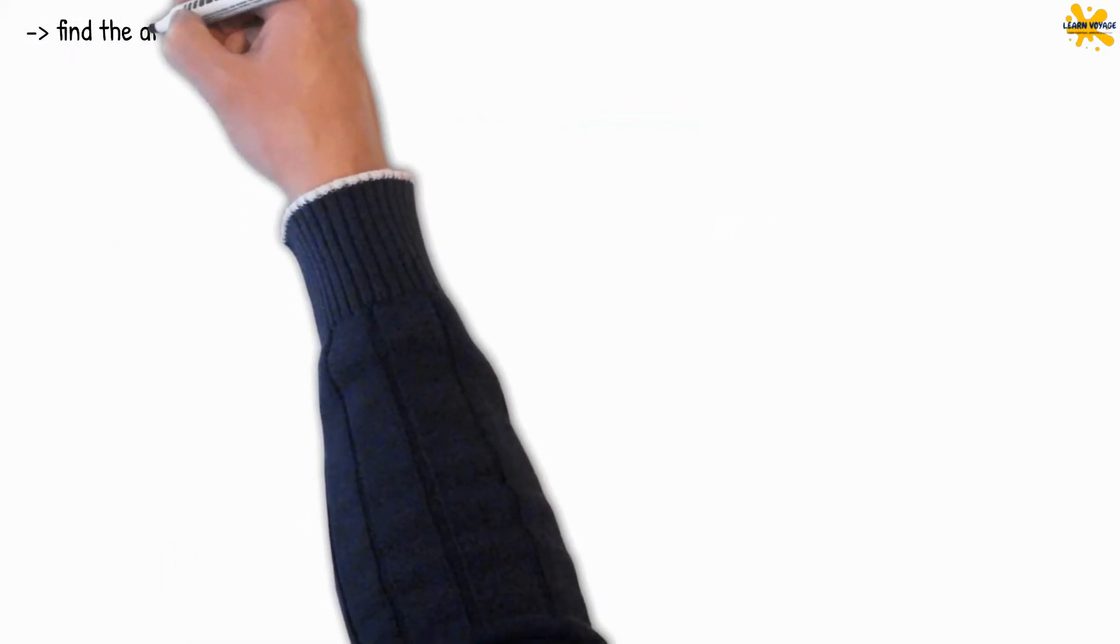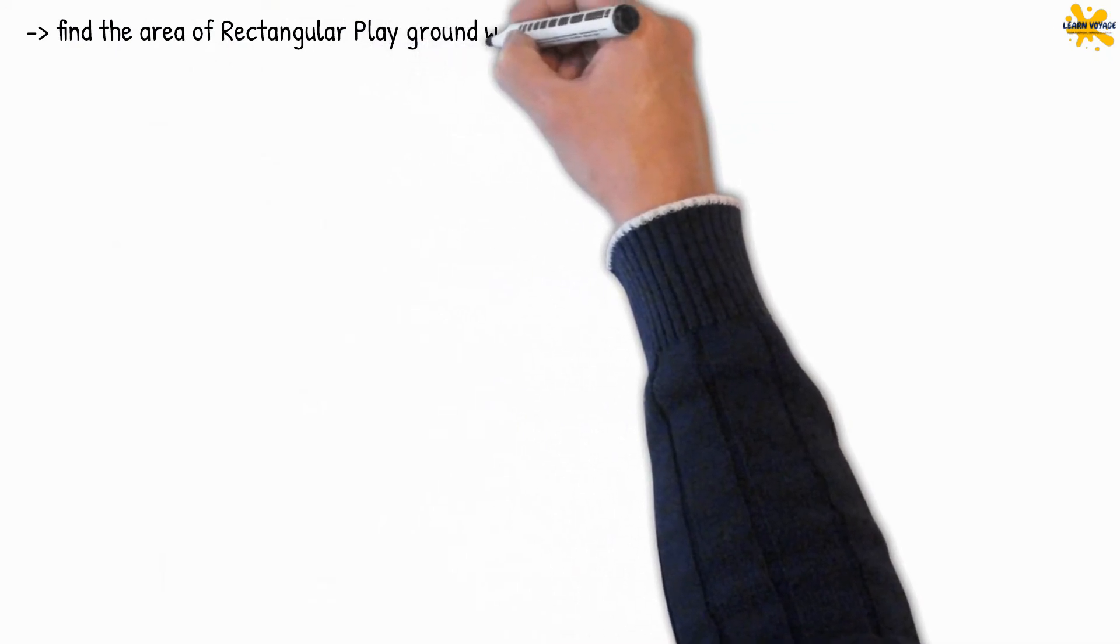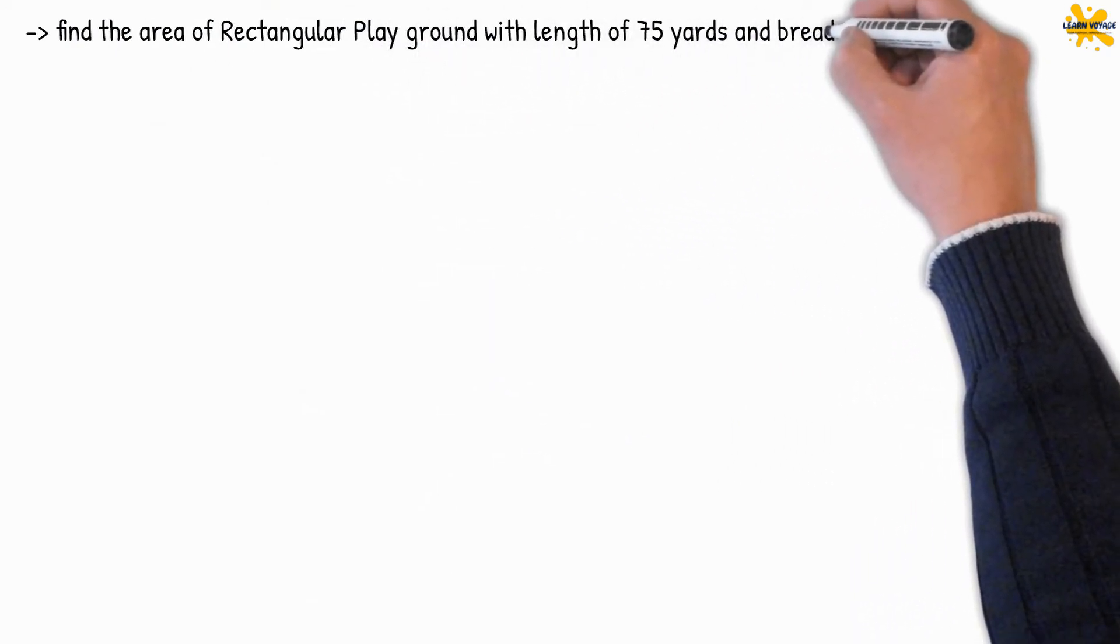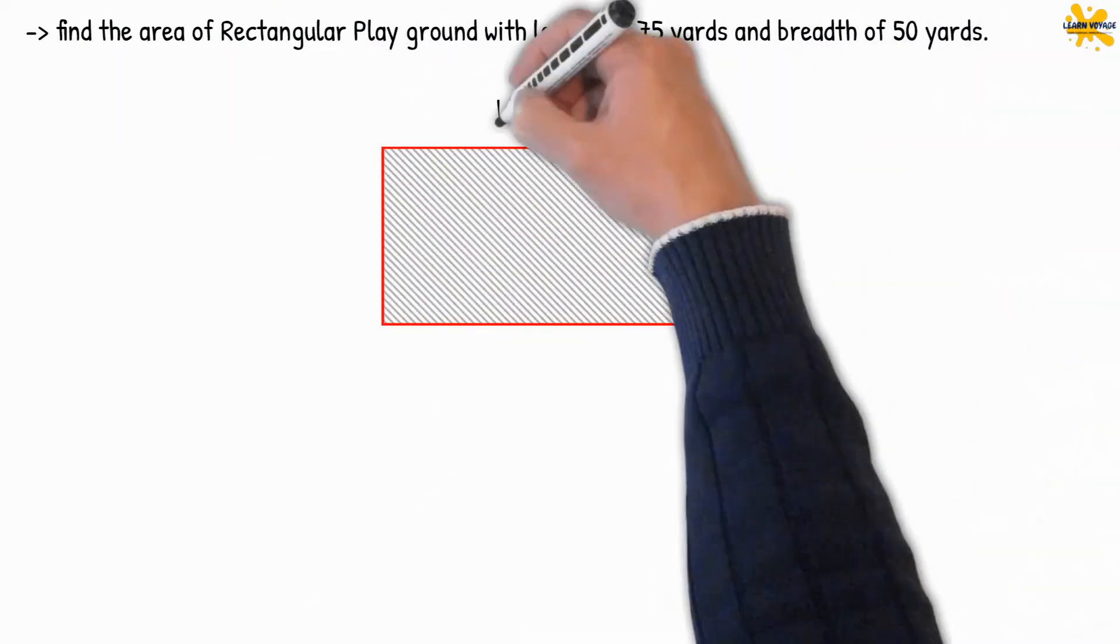Now find the area of rectangle playground with a length of 75 yards and the breadth of 50 yards.